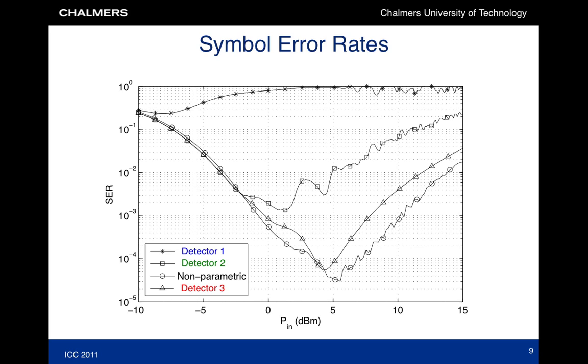This slide shows the symbol error rate as a function of the input power. The naive receiver that neglects nonlinearity performs very poorly. Accounting for the deterministic part of the nonlinearity, detector 2 achieves much better performance. Finally, our proposed detector can further improve on that, and is also much less sensitive to changes in the input power. Furthermore, the degradation with respect to the near-optimal nonparametric detector is small.